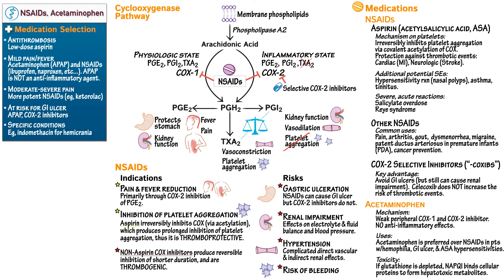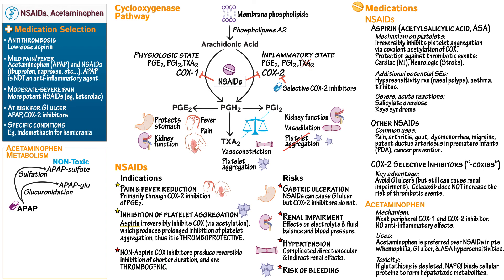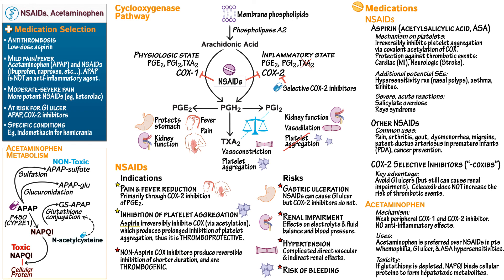Acetaminophen has safe metabolic pathways to form non-toxic products: it can undergo sulfation or glucuronidation, or P450 metabolism — most commonly CYP2E1 — to form NAPQI, which can form non-toxic products via glutathione conjugation to cysteine and mercapturic acid conjugates. However, if glutathione stores are depleted or overwhelmed, NAPQI binds cellular proteins to form toxic byproducts producing hepatotoxicity. In cases of acetaminophen overdose, we administer N-acetylcysteine to replenish glutathione stores and shunt NAPQI through glutathione conjugation rather than form toxic metabolites.